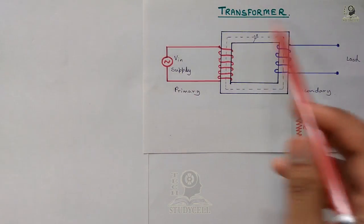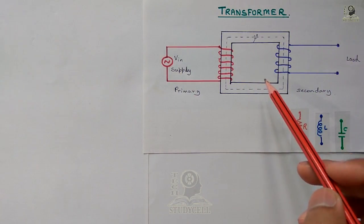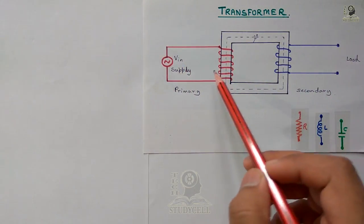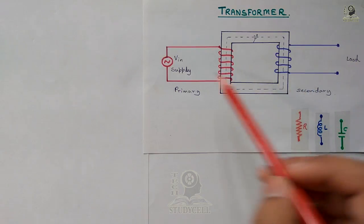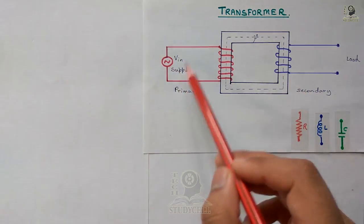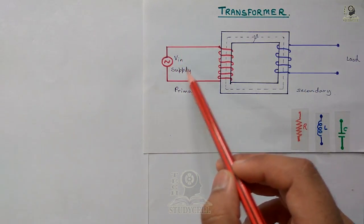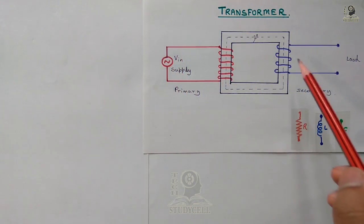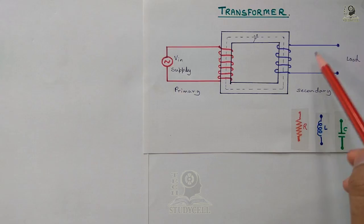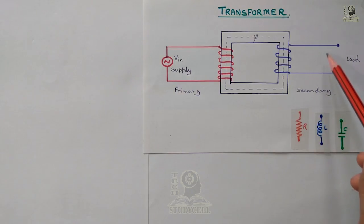As you can see, this is a transformer. This is a primary winding and this is a secondary winding. We have supplied the input voltage at the primary and we are going to connect the load at the secondary.